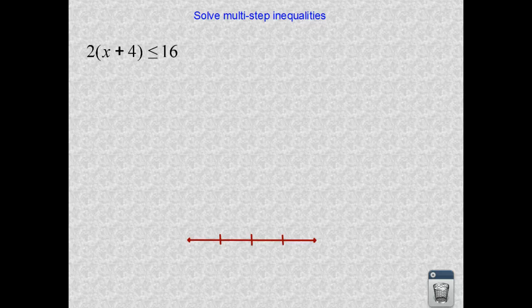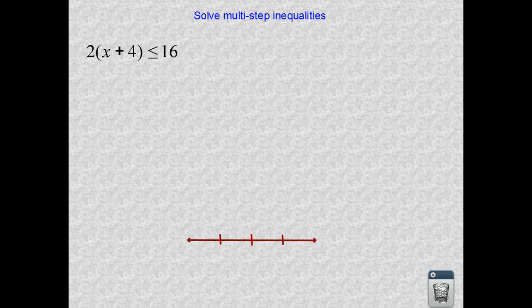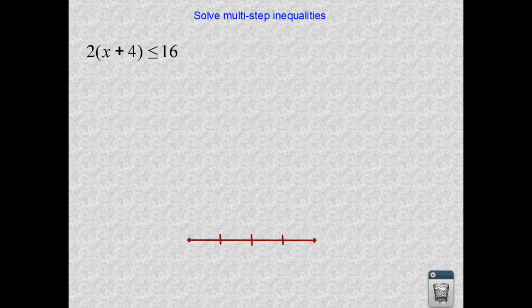Today we are solving multi-step problems. We have the distributive property shown here, so we're going to solve these just like we did the equations a while back. We use our distributive property, and now we are going to combine like terms.